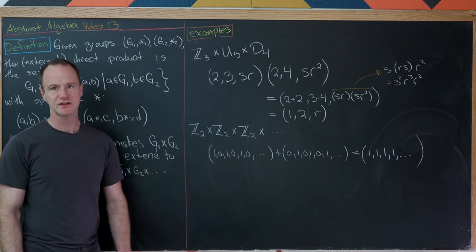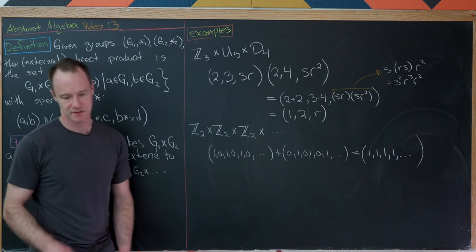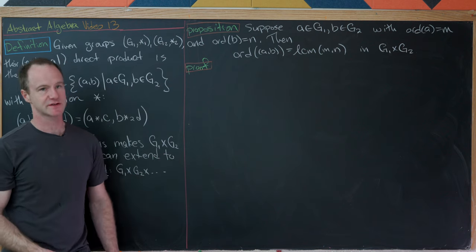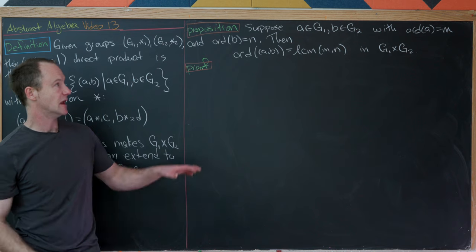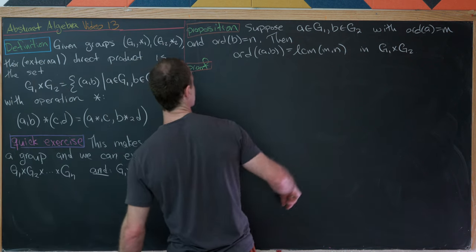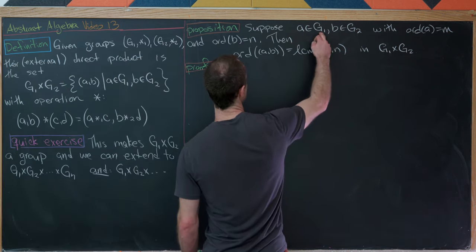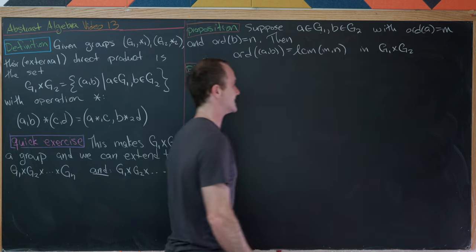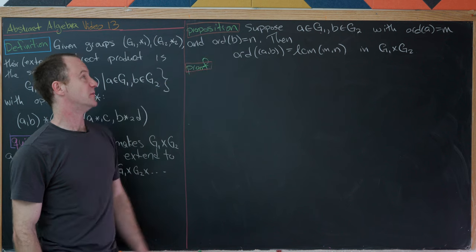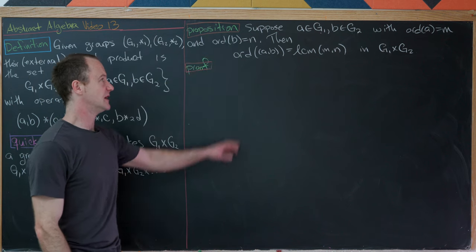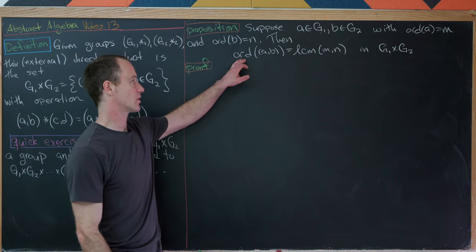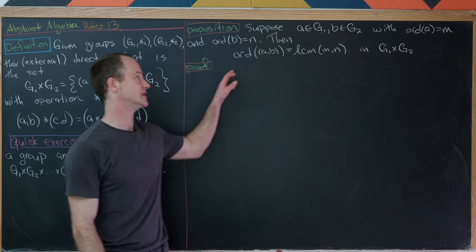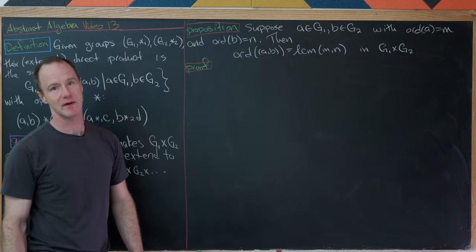Now let's start proving more general results. Our first result concerns the order of an element from an external direct product. Suppose a is in G1 with order m, and b is in G2 with order n. Then the order of (a, b) inside G1 cross G2 is the LCM of m and n.